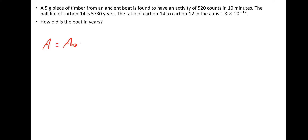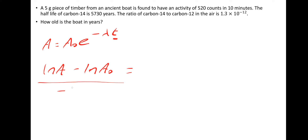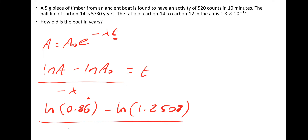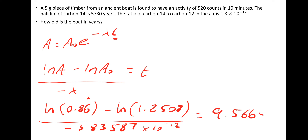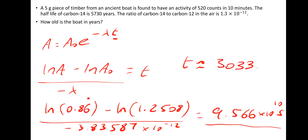Now using the exponential decay equation: ln A = ln A₀ − λt, so t = (log A − log A₀) / (−λ). That's (log 0.86 recurring − log 1.2508) ÷ (−3.83587 × 10⁻¹²), giving a time of 9.566 × 10¹⁰ seconds. Dividing by 365 × 86,400 gives approximately 3,033 years.